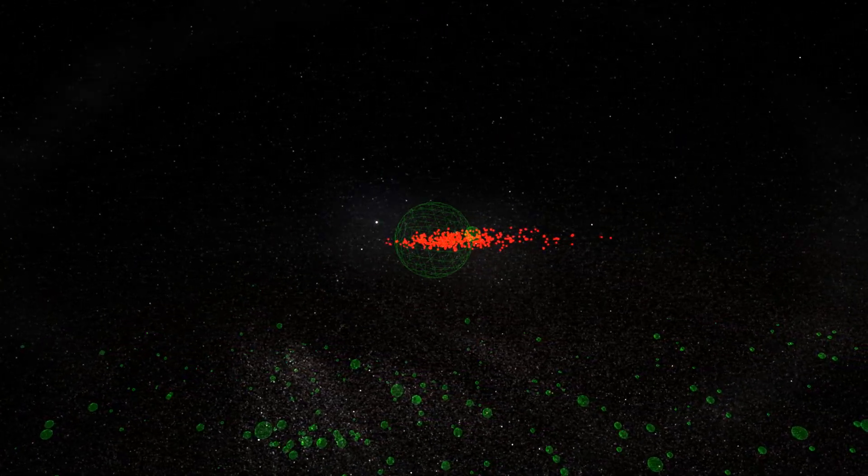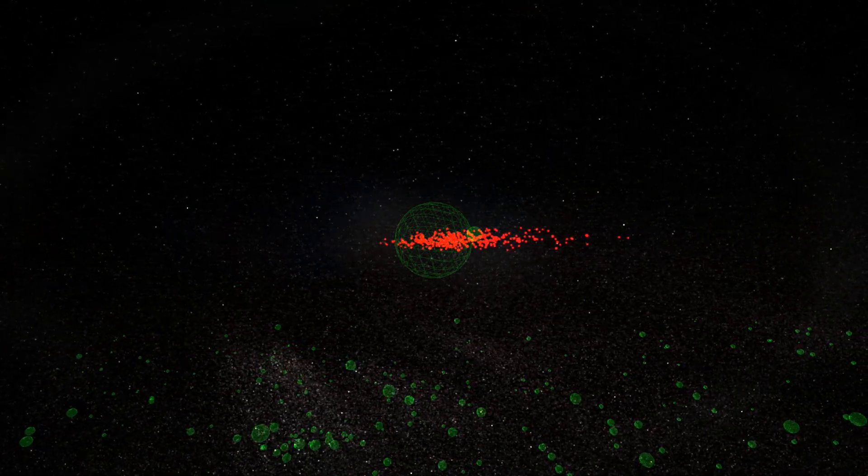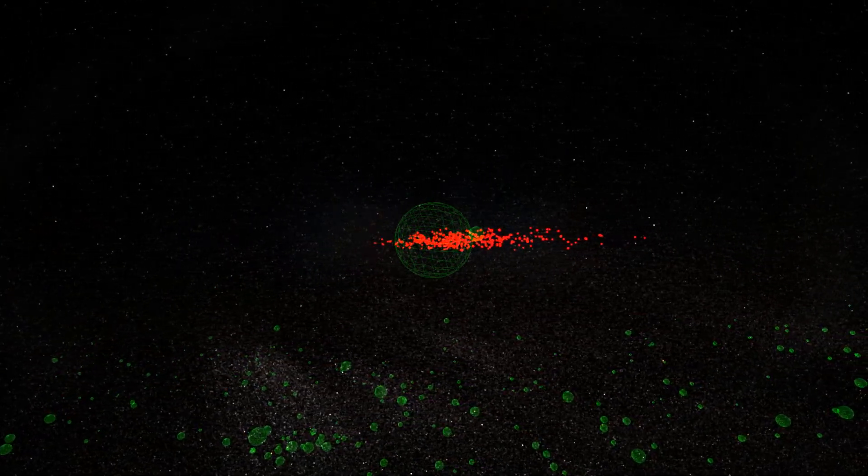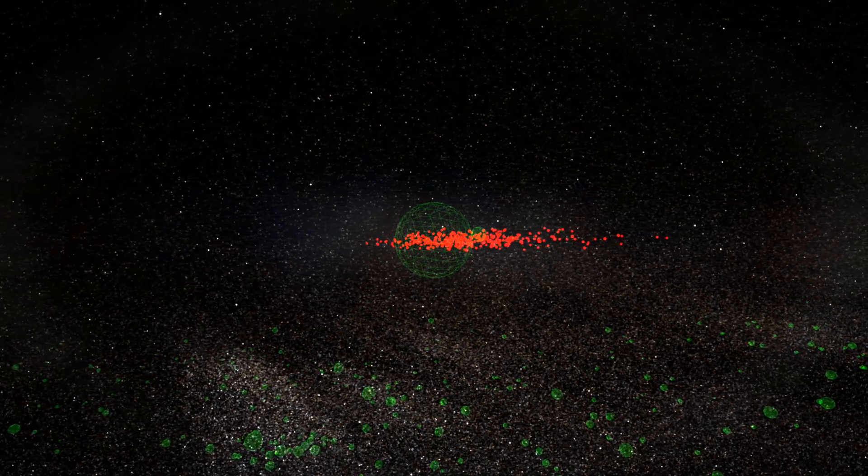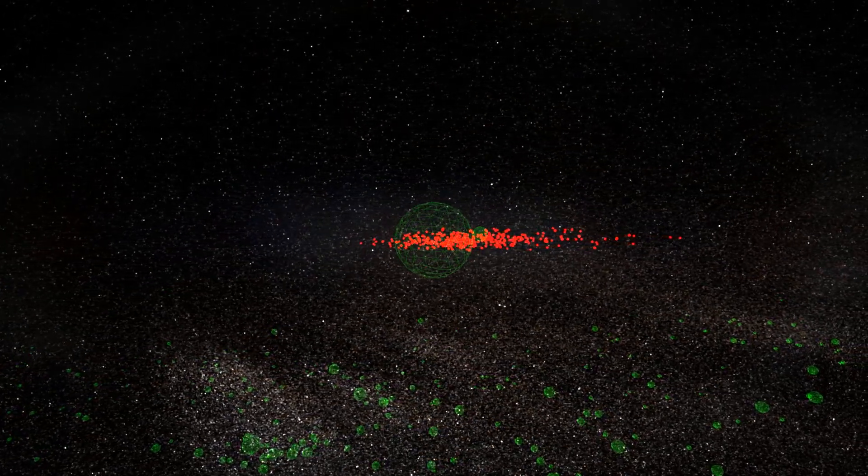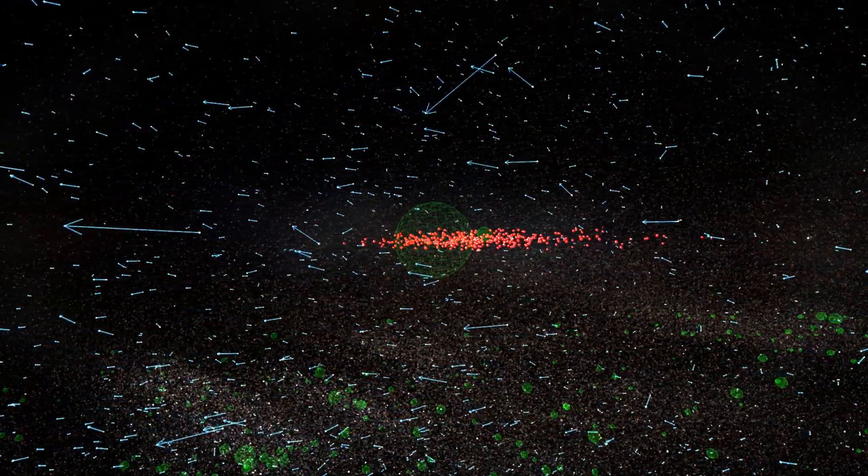Now we highlight the cluster members in red. And we also make the other stars brighter as well. We also show the velocity vectors of the stars.